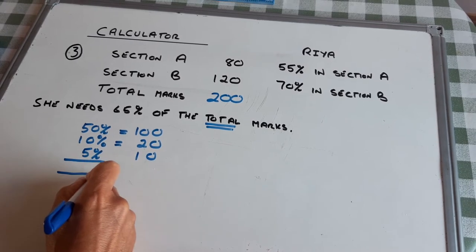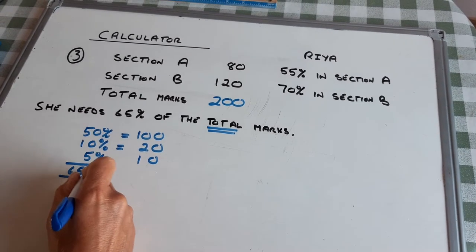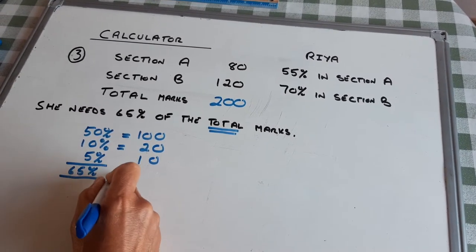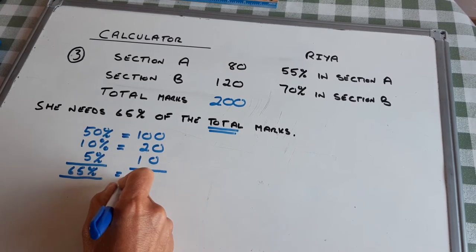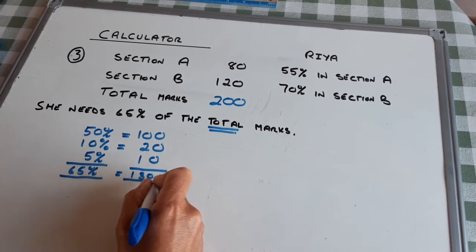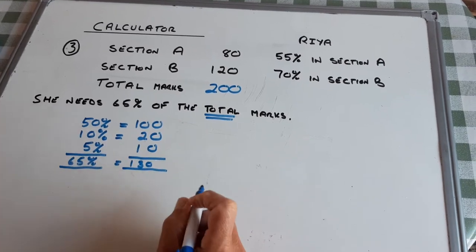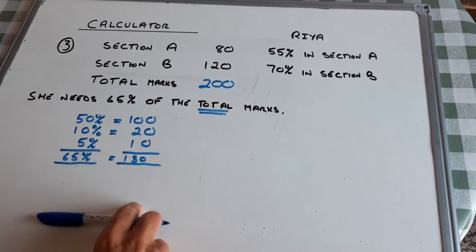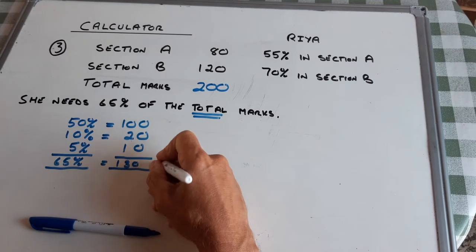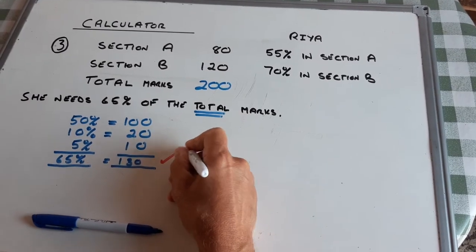So 65% is 130 marks. I need at least 130 marks to pass, and I'm going to give myself one mark for doing that.